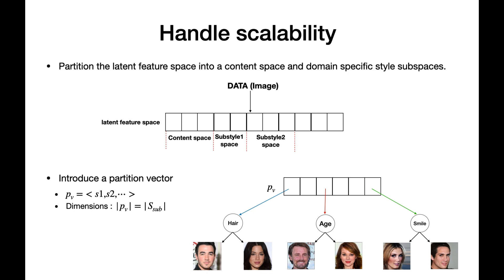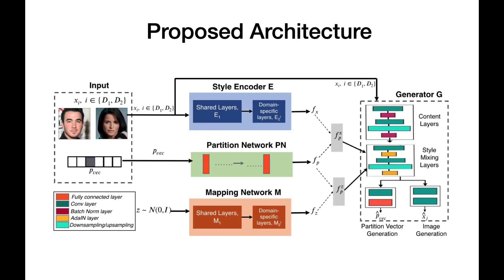Next is scalability. Following previous works, we can use a separate style encoder for each style subspace. This will increase the computational cost of the model and sometimes can lead to instability during training. To solve the problem of scalability, we assume that the latent space can be partitioned into content and style subspaces. We introduce a partition vector, which is a binary vector, and it stores the information of the common style subspace.